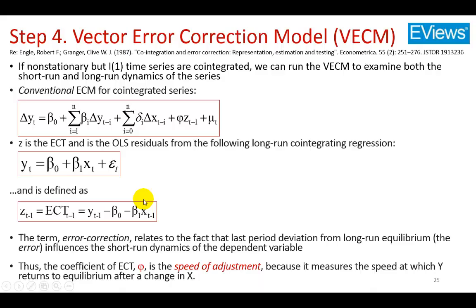The VECM is a restricted VAR model. I begin by showing the conventional error correction model for co-integrated time series, which shows the change in Y to be a function of not only previous changes in Y, but also current and past changes in X. In the model, all variables are considered endogenous. Importantly, we specify the error correction term Z, which is a variable of the lagged OLS residuals from the long-run co-integrating equation.